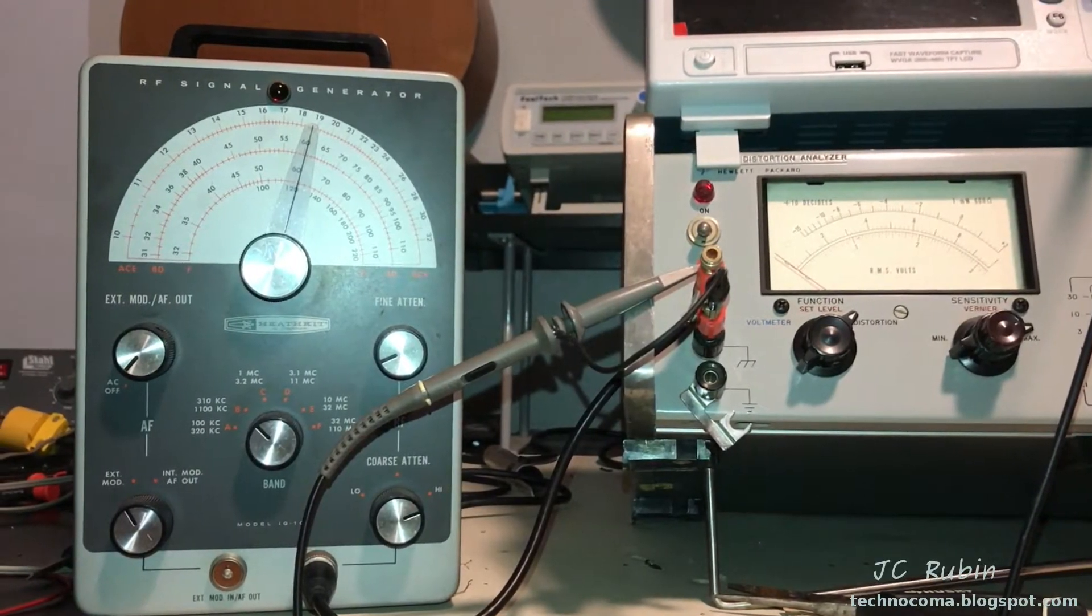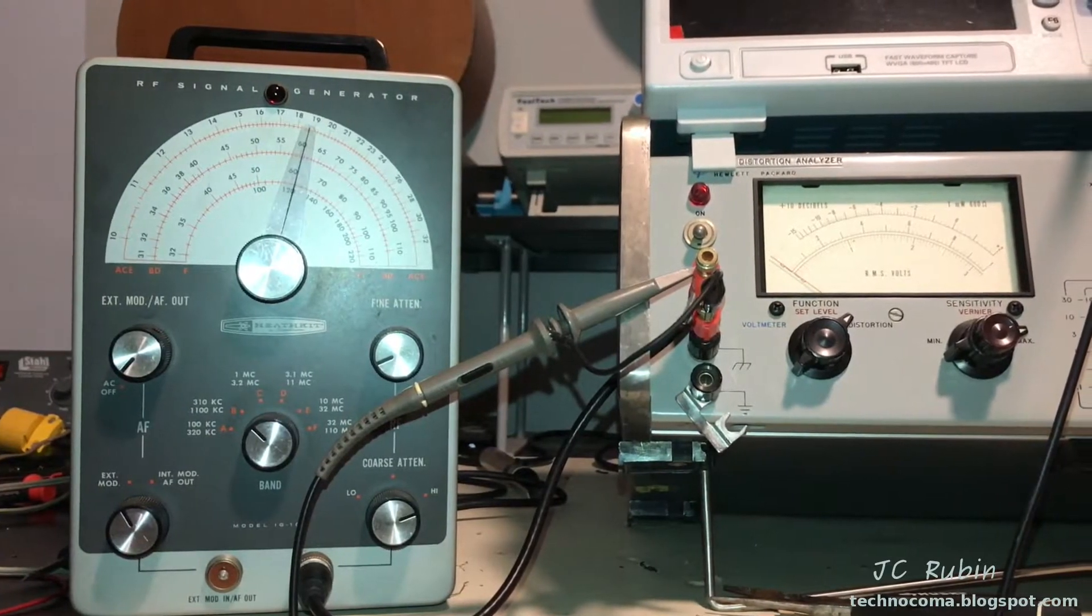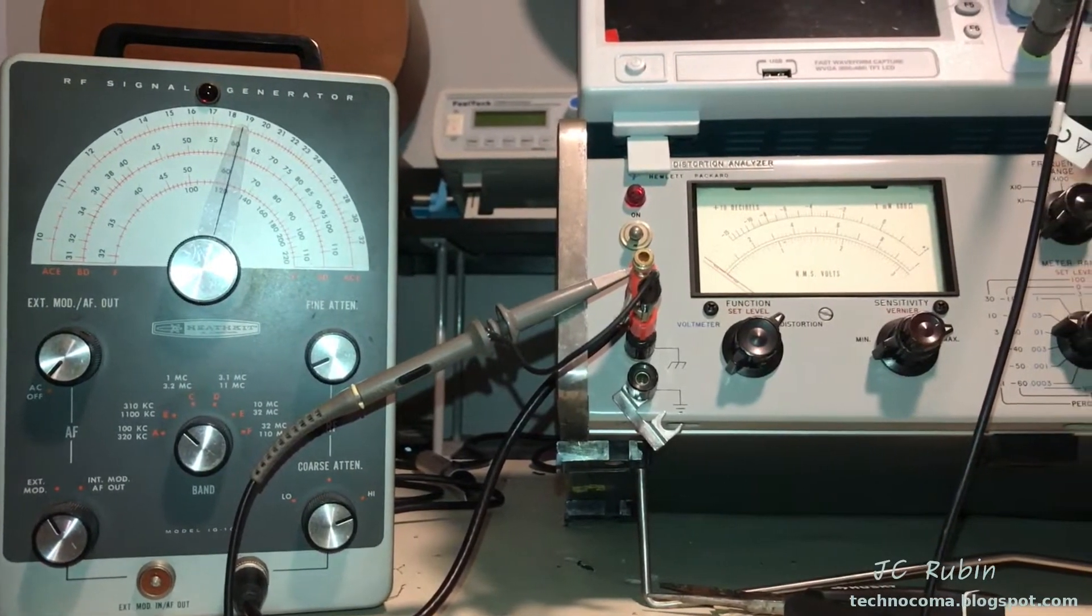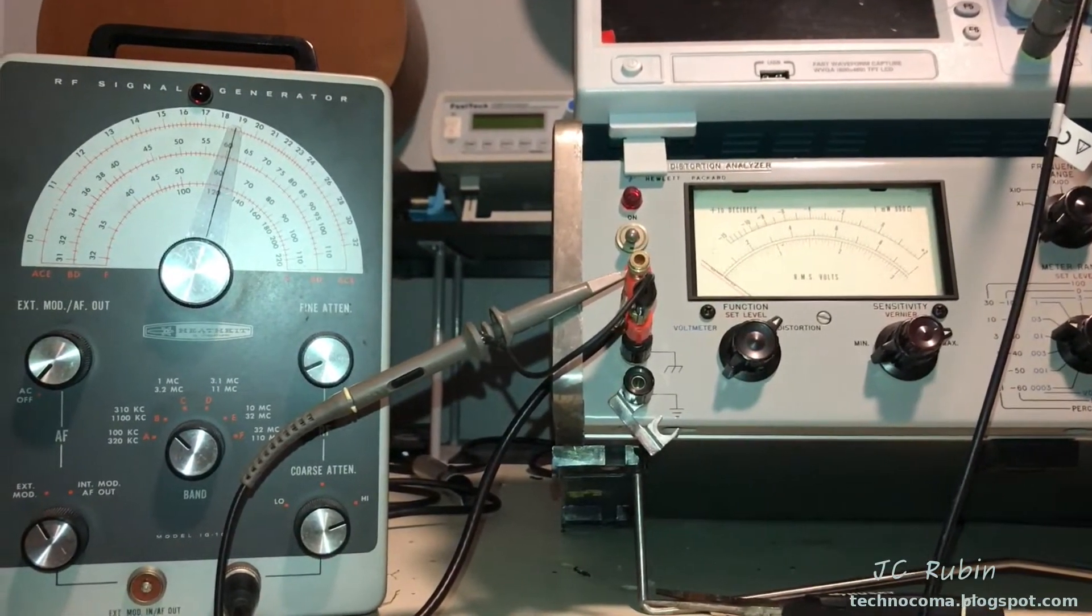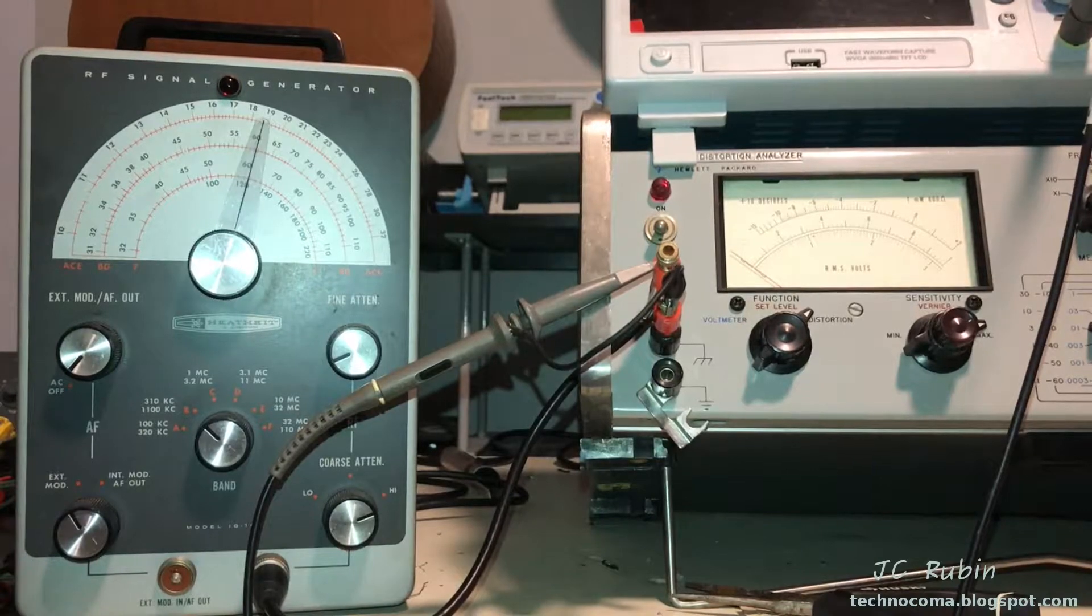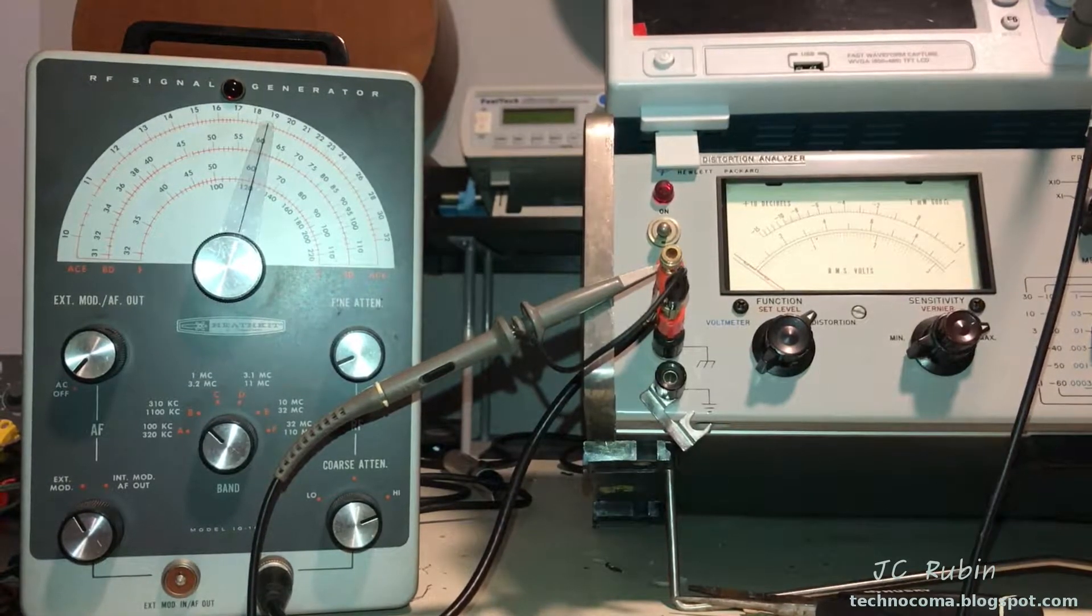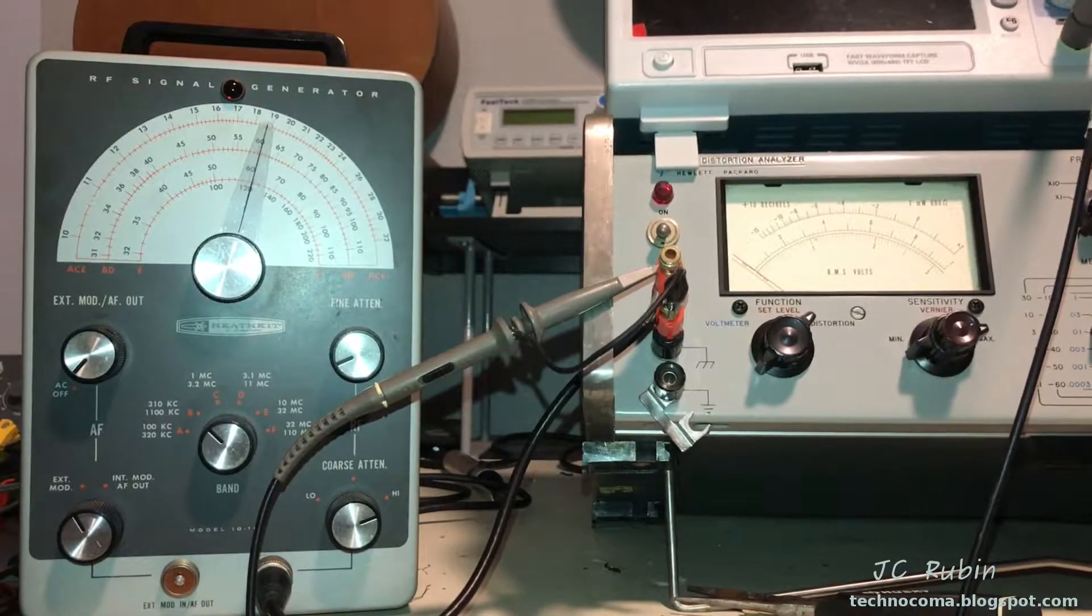Today we're going to take this Heathkit IG102 RF signal generator and hook it up to this HP 331 Alpha harmonic distortion analyzer to see how it does on the frequencies that we measured against the TSG17 RF signal generator and see how they compare.